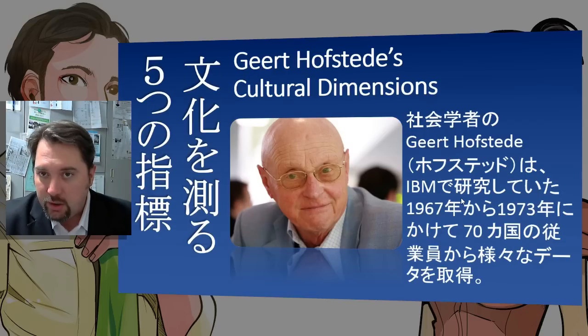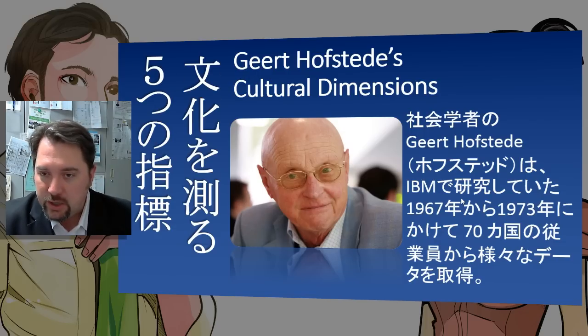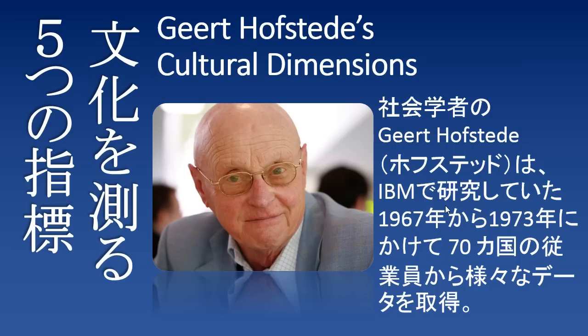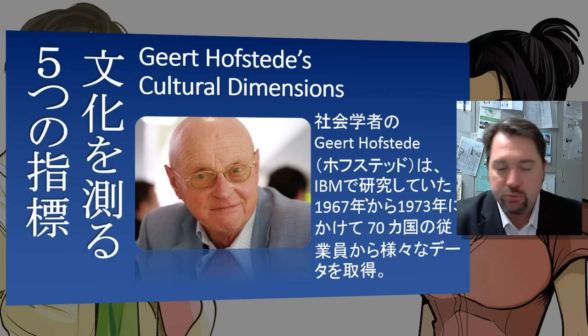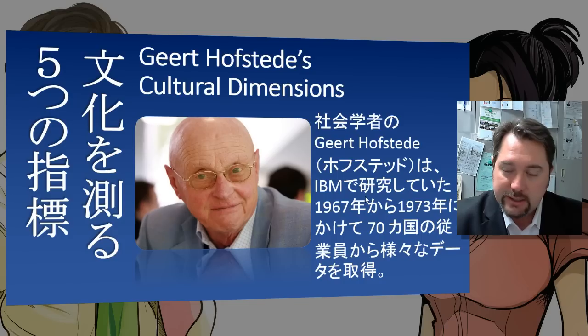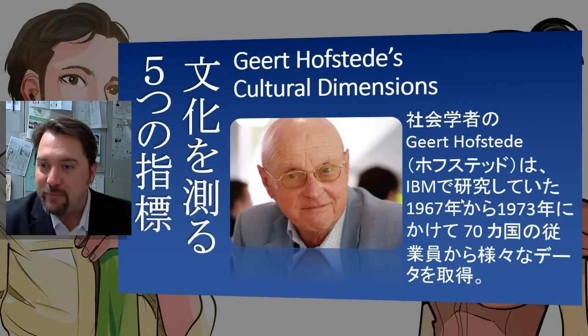I'm going to be using Gert Hofstede's cultural dimensions. Gert Hofstede developed these cultural dimensions as a way to measure different values, customs, and importances between cultures. He did most of this important work at the IBM Research Labs between 1967 and 1973, where he used five cultural dimensions to compare 70 countries around the world. Today we're going to be looking at Japan and the United States.